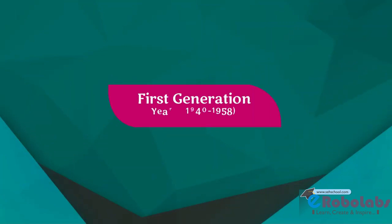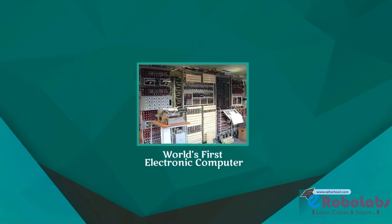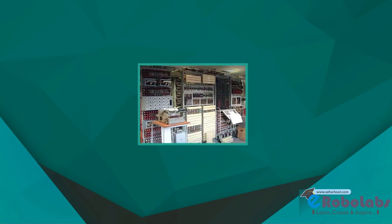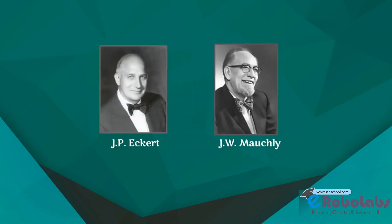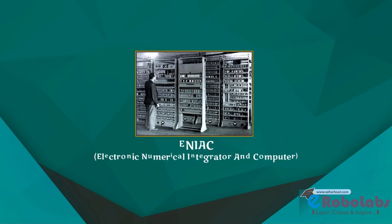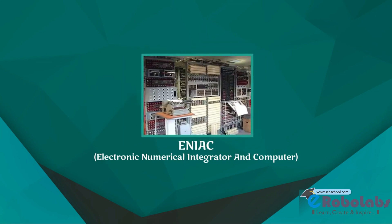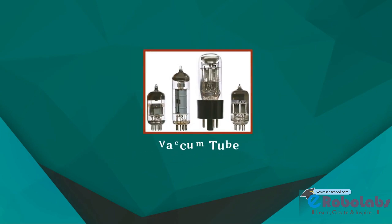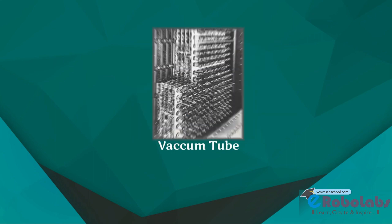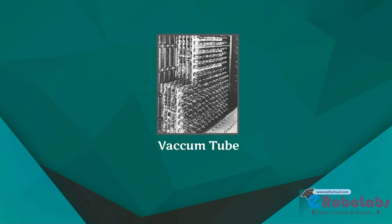First generation, year 1940 to 1958. ENIAC was the world's first successful electronic computer, developed by two scientists, J.P. Eckert and J.W. Mauchy, in the year 1946. The full form of ENIAC is Electronic Numerical Integrator and Computer. ENIAC was a huge computer and its weight was 30 tons. It could store only a limited amount of information. In the first generation computers, the concept of vacuum tubes was used. A vacuum tube was an electronic component which had very low work efficiency, could not work properly, and required a large cooling system.